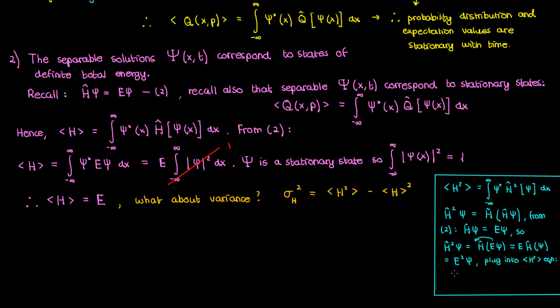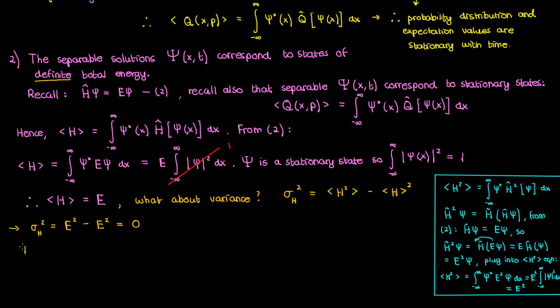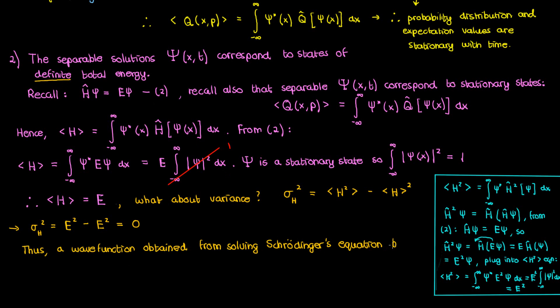Plugging this into the integral for the expectation value of H squared gives E squared times the integral of the modulus of small psi squared. By the normalization condition this integral is 1, so the expectation value of H squared is E squared. Plugging into the variance equation, sigma H squared equals E squared minus E squared, which is 0. This means the expectation value of the Hamiltonian is a constant E with zero spread — for a wave function that is a separable solution to the Schrödinger equation, every measurement of the total energy gives E. There is no uncertainty in the total energy; it is always definite and fixed.